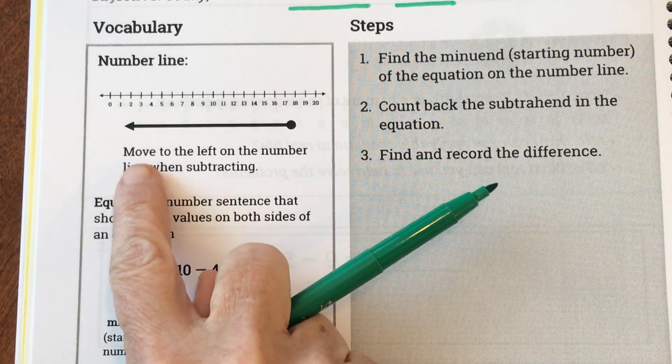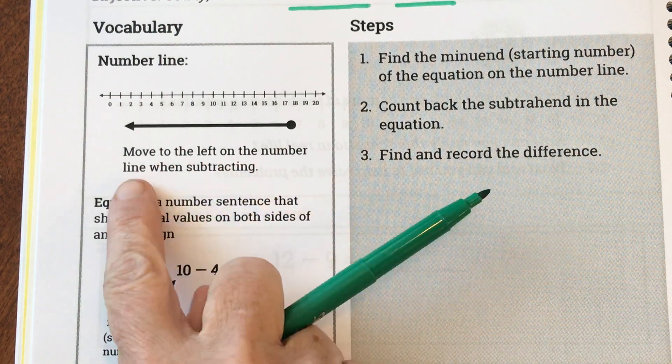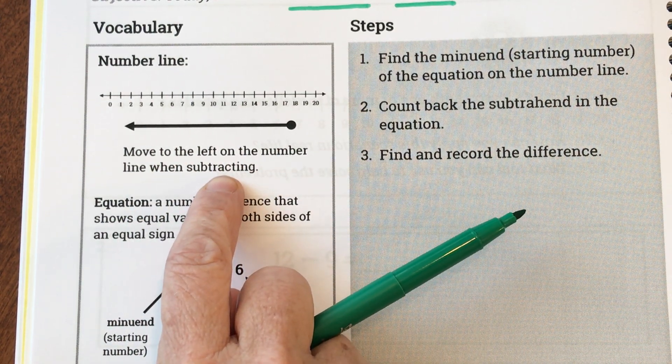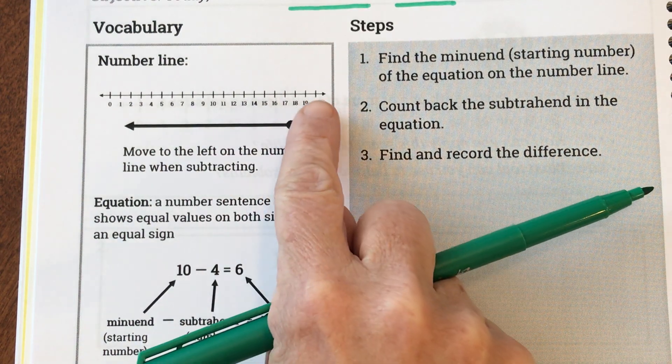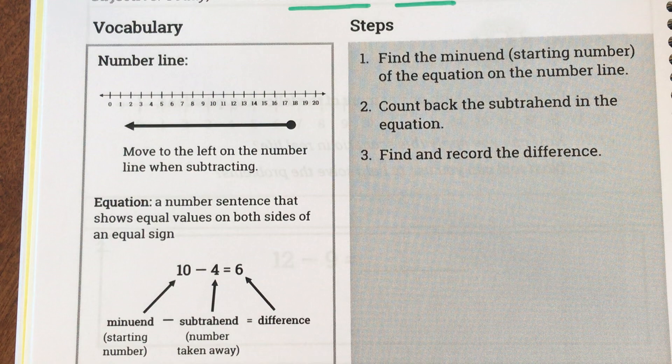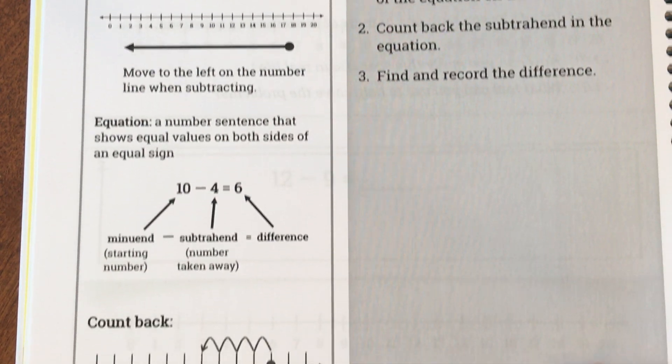But it says move to the left on the number line when we're subtracting. When you subtract things get smaller and we're going to take away. So we're going to be going backwards on a number line to subtract today and I'll show you what that looks like.